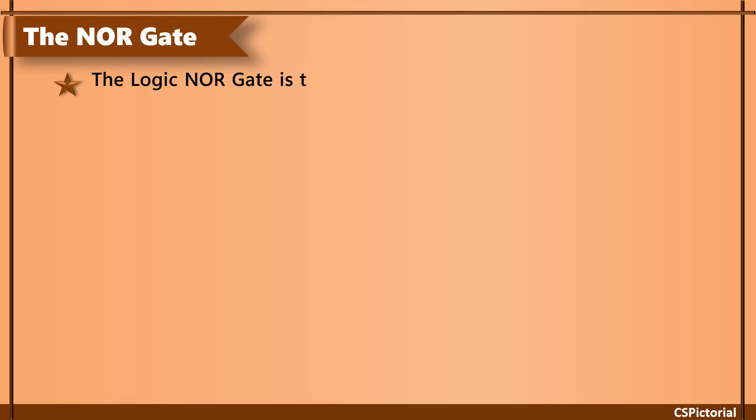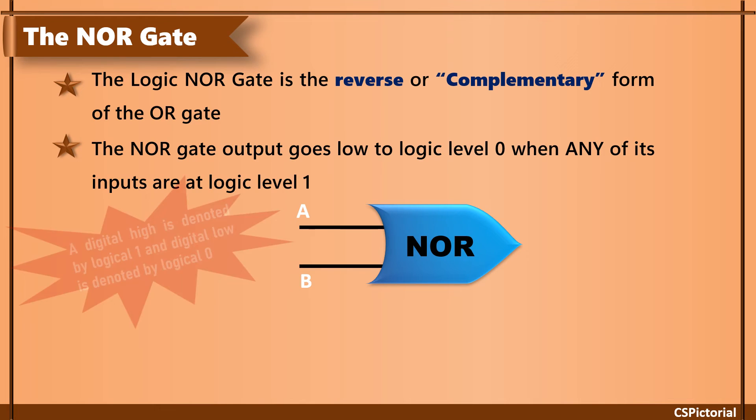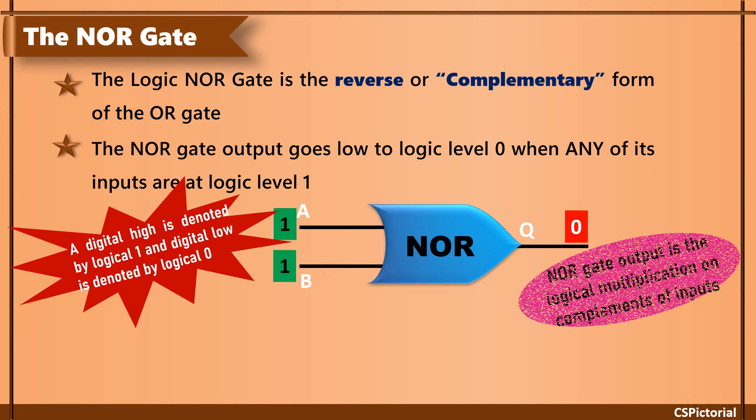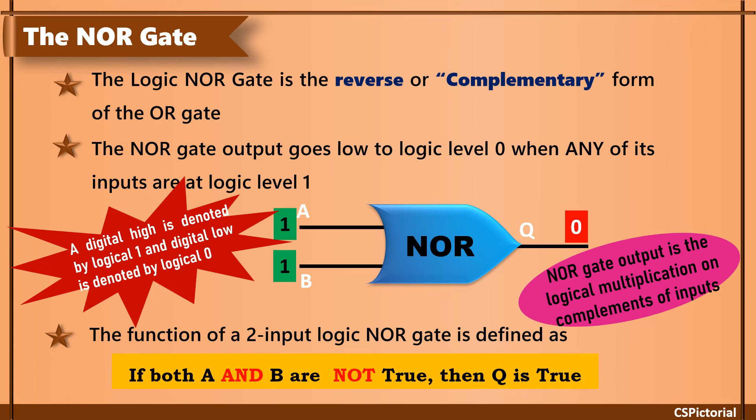The NOR gate function is just the reverse of an OR gate. The NOR gate output goes low when any of its inputs is high. The logic of a NOR gate is that of a logical multiplication performed on the complements of inputs. So, in NOR gate, if both A and B are not true then Q is true.